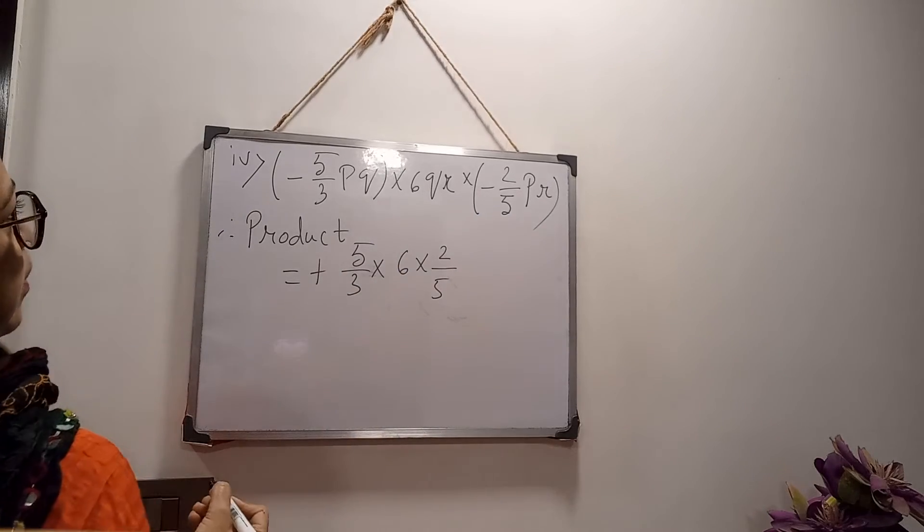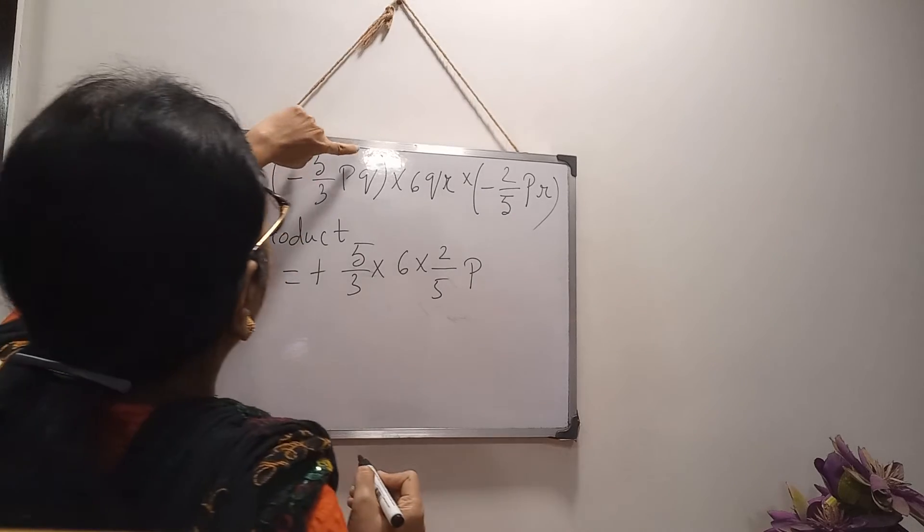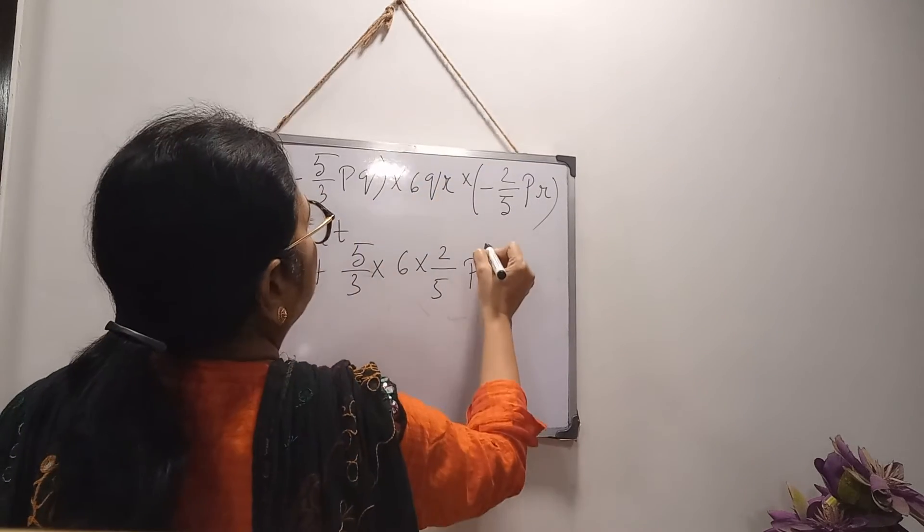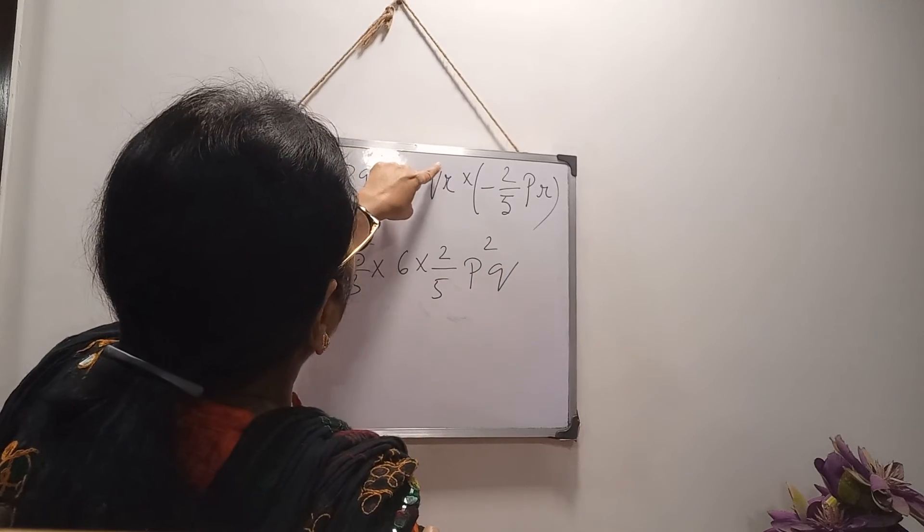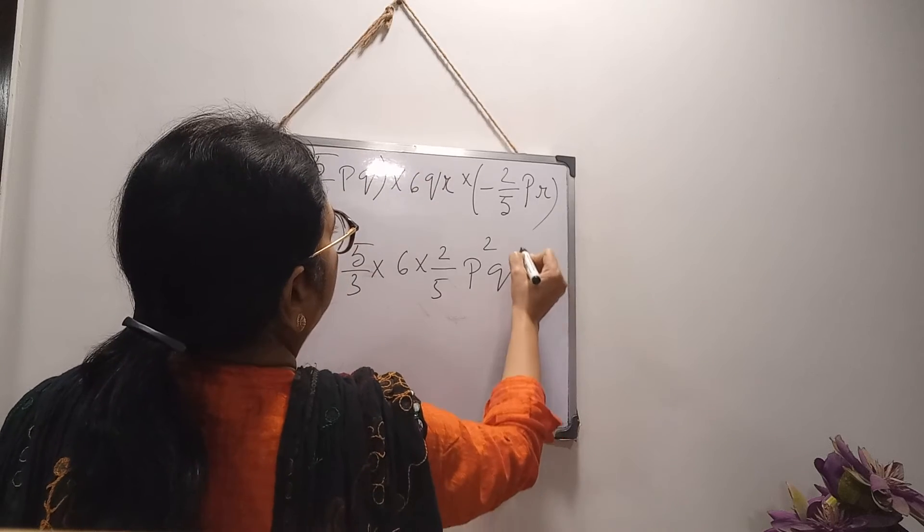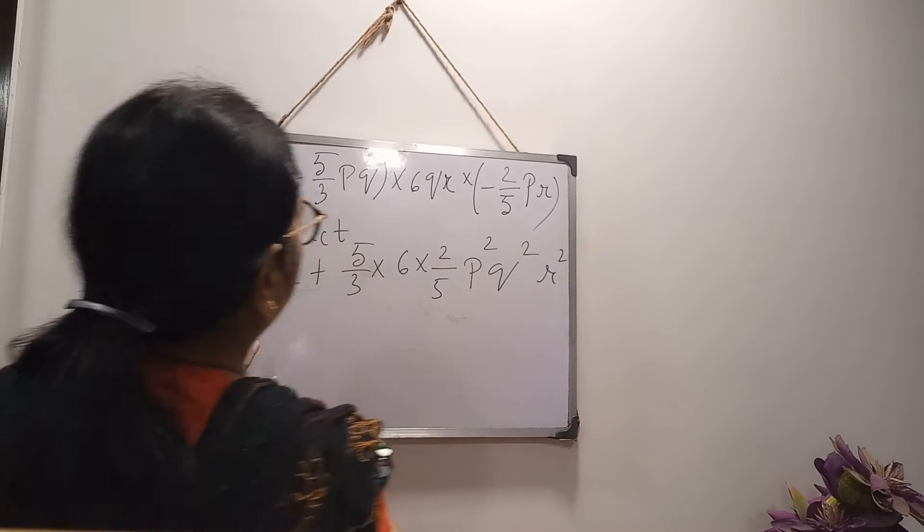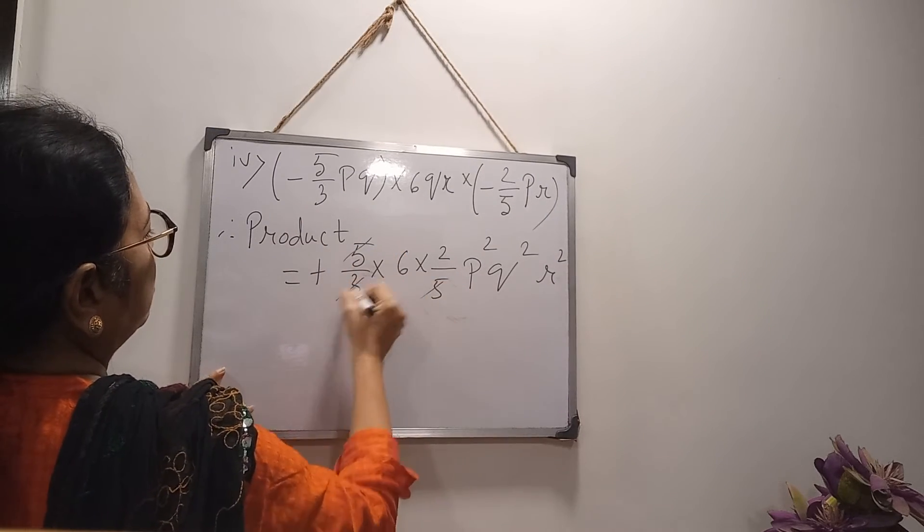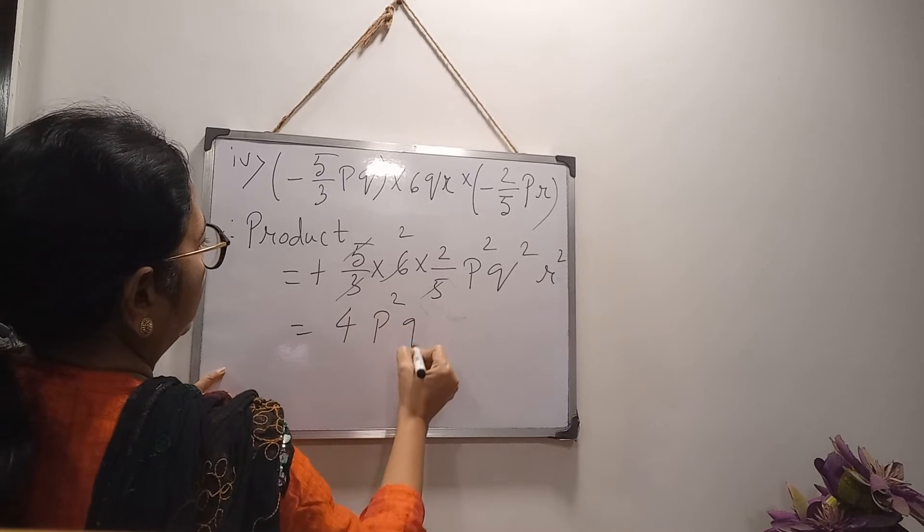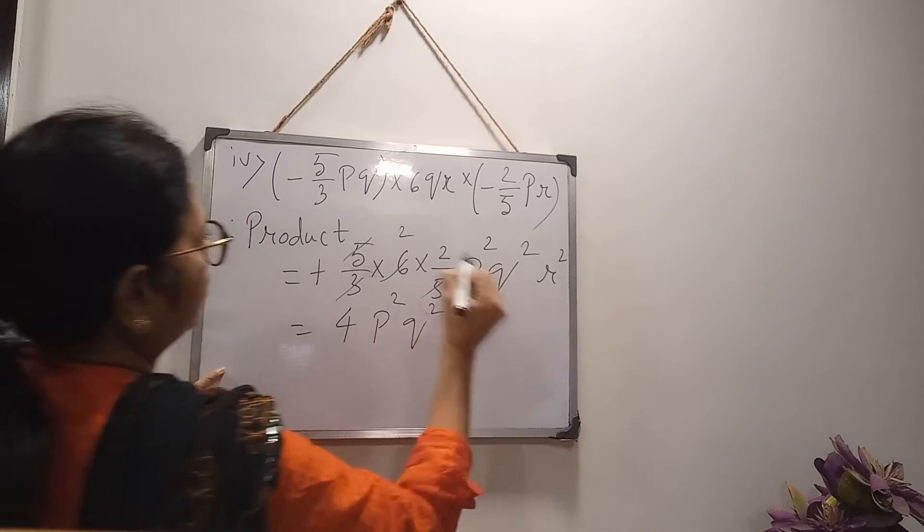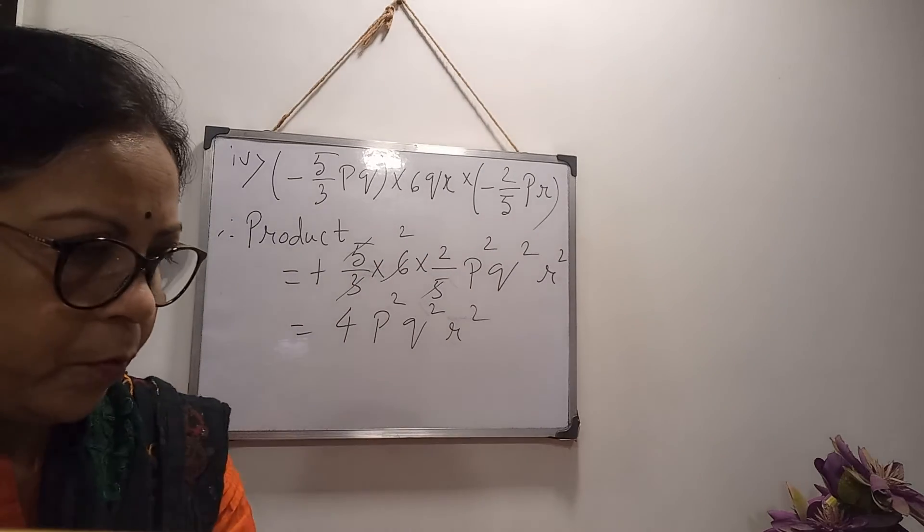And here variables are P, Q and R. So first P. What are the powers of P? Here 1, and there is another 1, 1 plus 1 is 2. Q, 1, 1, 2, Q square. R square. And 5 and 5 you cancel. 6 and 3 is 2. So 4 P square Q square R square. So sum number 12 over.